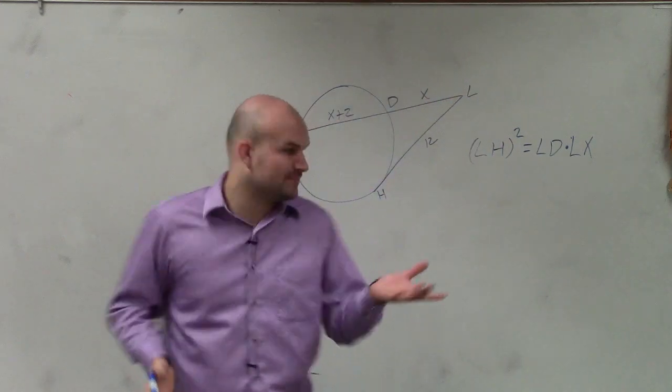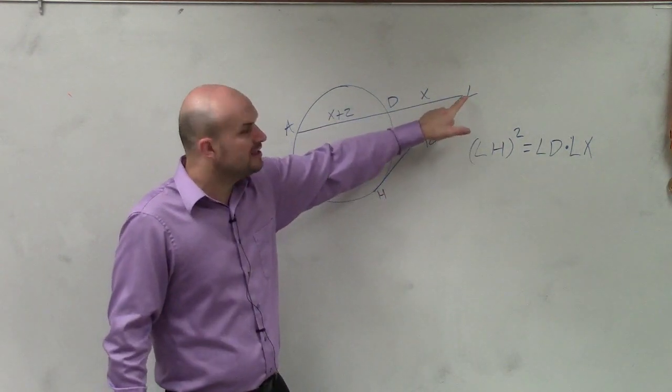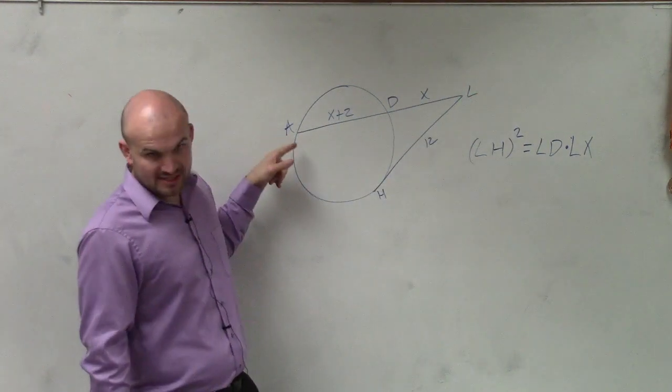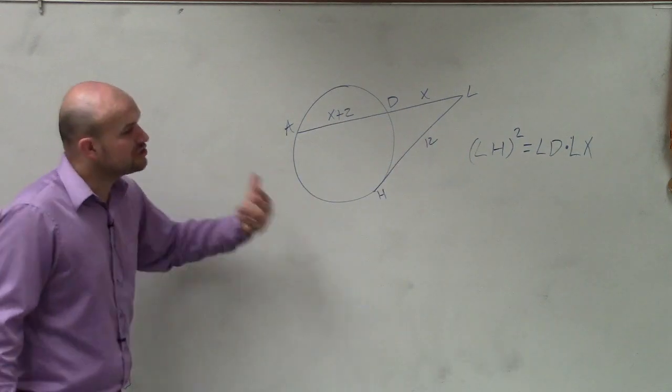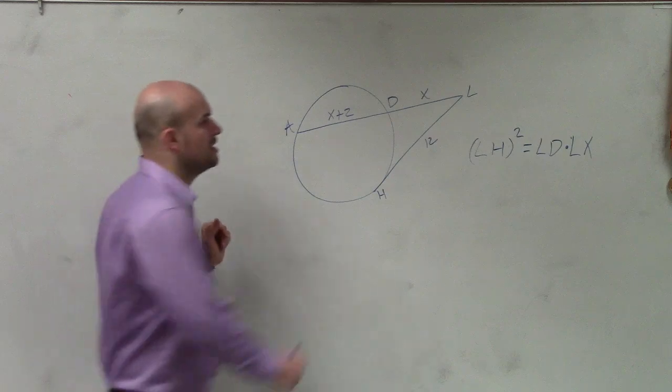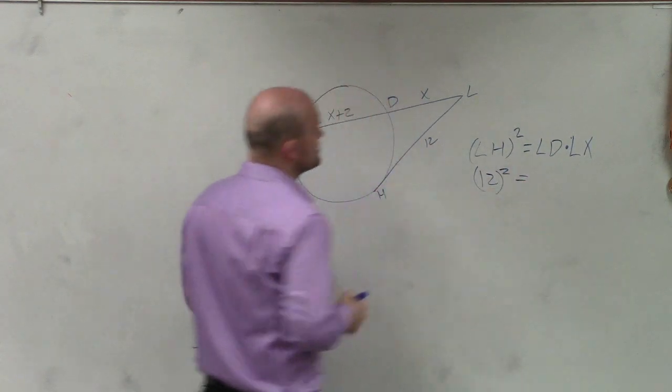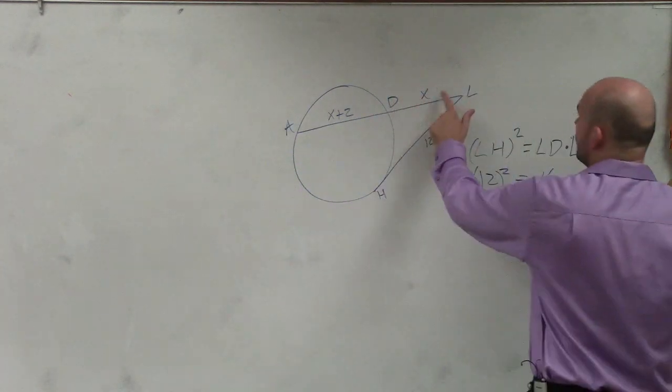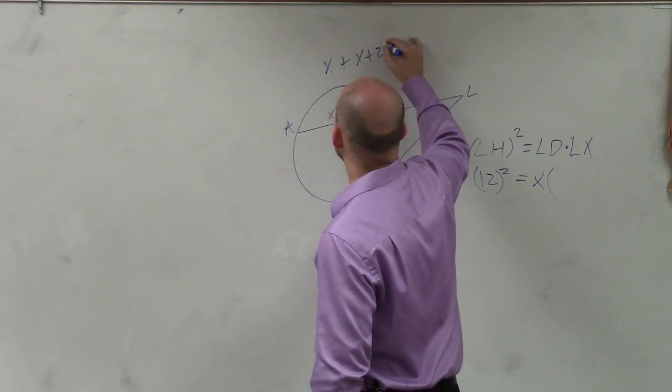We could say that LH squared was equal to LD times LX. That was our relationship, that the length of a tangent line was equal to the length of the secant line to the circle times the whole length of the secant line. So that was one of those formulas that we presented last class period. So now let's just go and figure out what is our length for each. LH is going to be 12 squared equals LD, which is X, times what is this plus this?